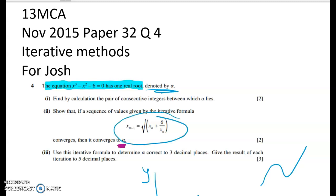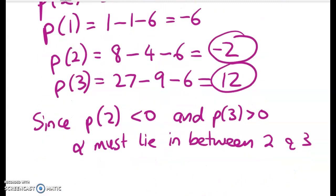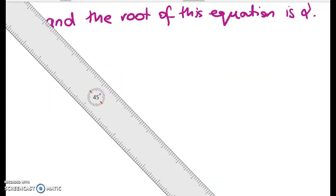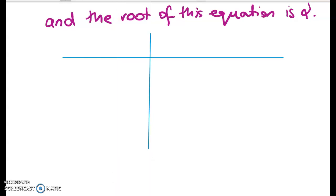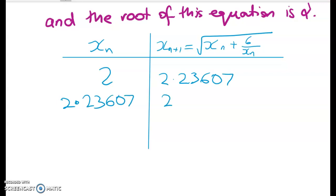Now the last thing we've got to do is to use this formula to determine alpha correct to three decimal places. But we have to give the result of each iteration to five. So let's do a table. Now this is boring, but it's a really easy place to show that you know what you're doing. So we'll start with x n here. And here we've got x n plus one. So it's this. So let's start with two and put it in and see what we get. Well, we get two point two three six zero seven. Then we put that in as my updated value.